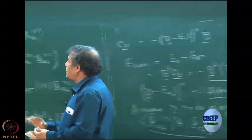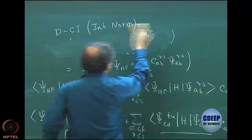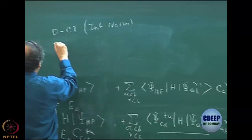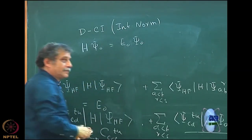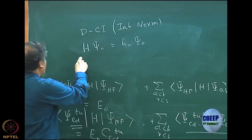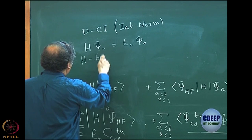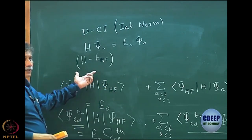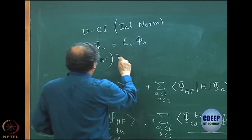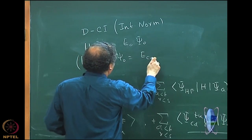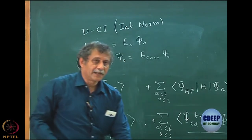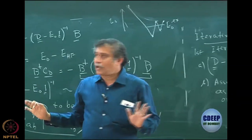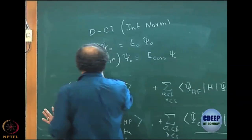Let me rewrite the CI equation by subtracting E_Hartree-Fock from both sides. The Schrödinger equation was H psi0 = E0 psi0. I define a new operator H minus E_Hartree-Fock, so that acting on psi0 gives E_correlation times psi0, because I subtract E_Hartree-Fock from the right-hand side as well. So I have a new operator on the left-hand side which is H minus E_Hartree-Fock.